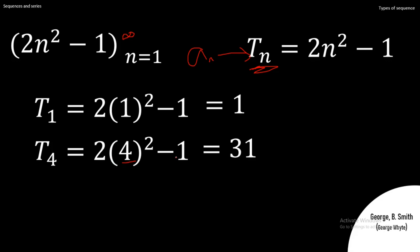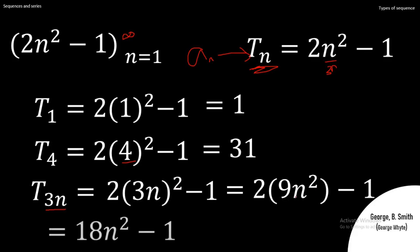But what if you want to find the 3n position, the 3n-th term? This simply means in place of n, we are still going to put 3n. So doing that, putting 3n in place of n, this is what you have. If you square this, that will give you 9n². So you have something like this. Now you multiply 2 times this—that will give us 18. So this becomes 18n² - 1.